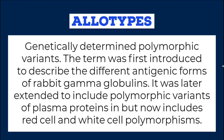Allotypes: Genetically determined polymorphic variants. The term was first introduced to describe the different antigenic forms of rabbit gamma globulins. It was later extended to include polymorphic variants of plasma proteins, and now includes red cell and white cell polymorphisms.